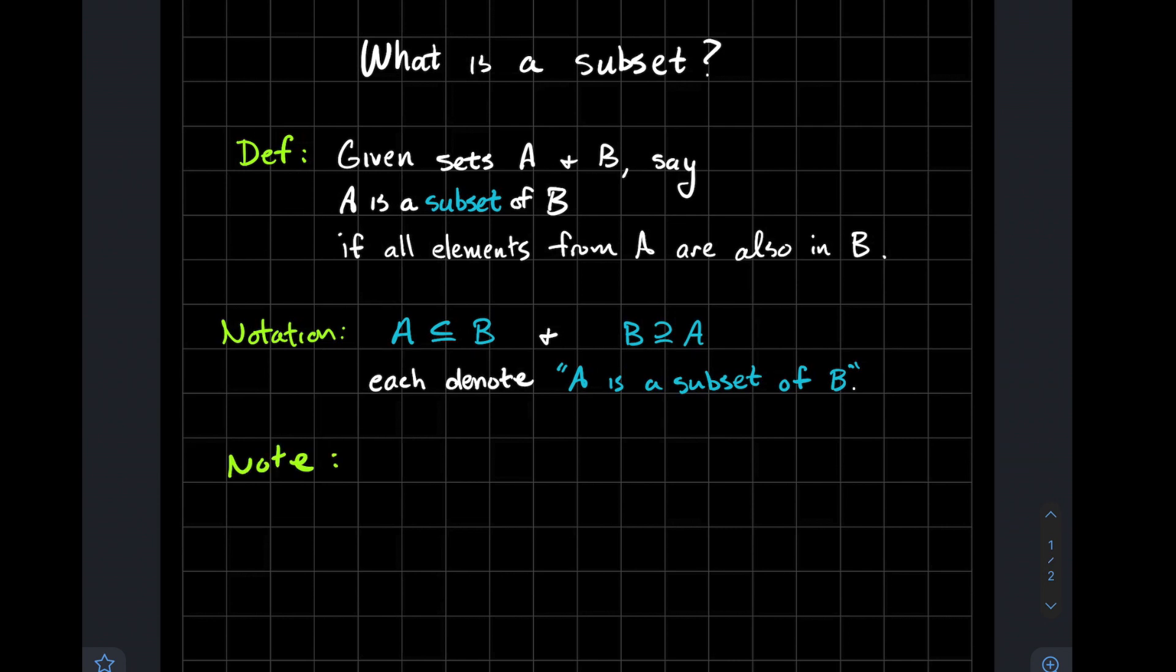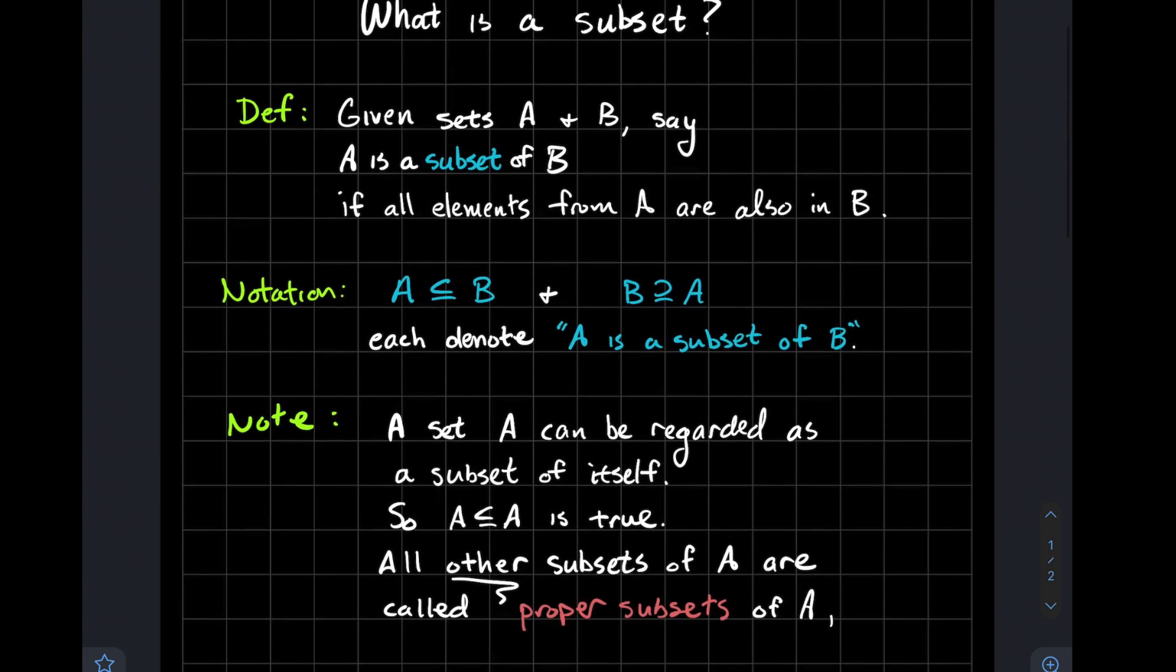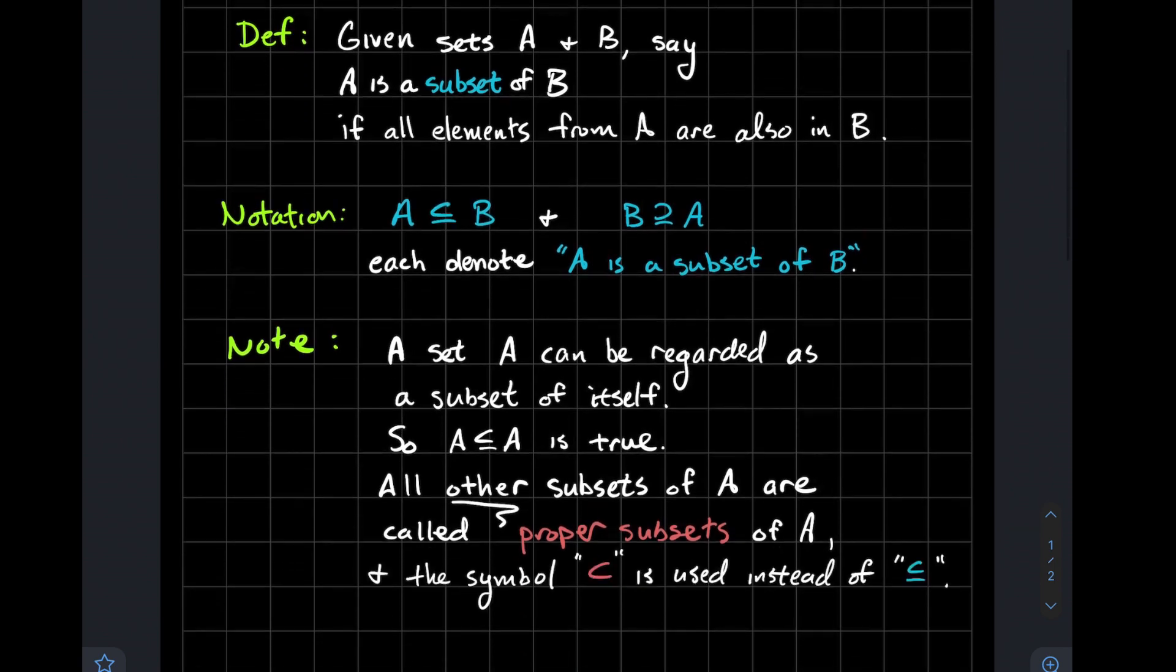And another note about subsets here: a set A can be regarded as a subset of itself. Another way to say that is that A is a subset of A is true, whereas all other subsets of A are called proper subsets of A. And we've got a different symbol if you really want to emphasize to somebody that this set is a proper subset of another set.